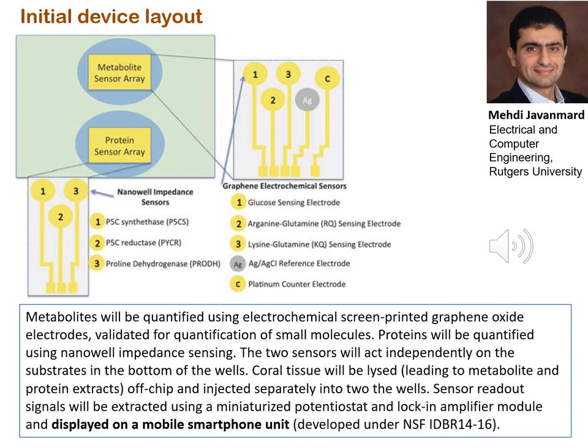In my final slide, I want to show you the directions our research is going. In collaboration with Mehdi Javanemar at Rutgers University, we're using the metabolite data and the identification of known metabolites and the proteins in these pathways to create a portable device for measuring coral stress in the field. This device will have two arrays — one for metabolites and one for proteins — and we hope to have a rapid extraction protocol for both inputs to be able to do this work rapidly and make it available to people around the world. That's the end of my talk. Thank you so much for listening — I'm happy to answer questions.